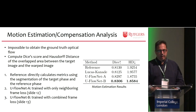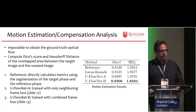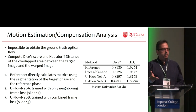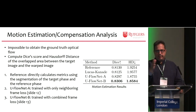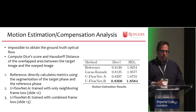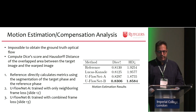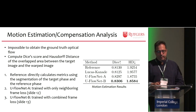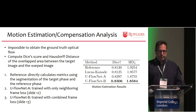The other thing I wanted to test relates to interpretability, which is an important direction. Any doctor would like to know what the network is doing. So how about the optical flow — the velocity distance between successive frames? It's impossible to get ground truth, but you can compute the Dice score and Hausdorff distance of the overlapped area between the target image and the warped image. The references directly calculate metrics using segmentation of the target phase and reference phase. Flow net A uses only neighboring frame loss, while flow net B uses a combined frame loss. Flow B does much better.